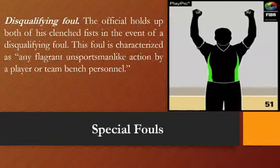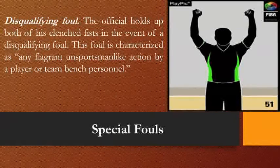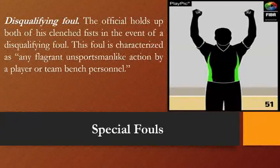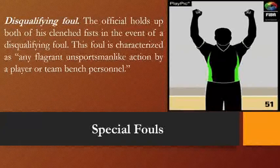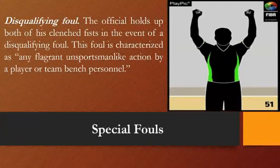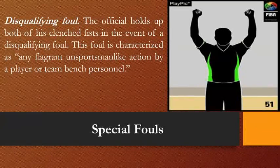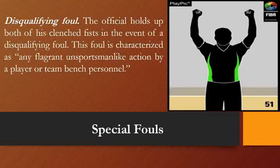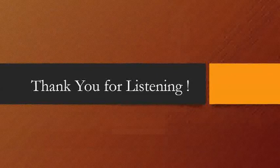The last special foul is disqualifying foul. The official holds up both clenched fists. This foul is characterized as any flagrant unsportsmanlike action by a player or team bench personnel. The referee whistles the disqualifying foul by raising both hands with clenched fists, and the player is immediately out of the game — they can no longer stay on the bench and must leave the competition control area. That concludes the official hand signals, covering game clock signals, scoring, informative signals, violations, types of foul, substitution, timeout, and special fouls.